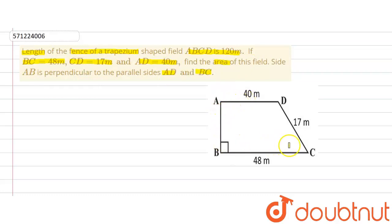This is something which is given in the question and the figure which we get is this ABCD. So the three sides BC, CD and AD are given. BC is 48 meter, CD is 17 meter and AD is 40 meter.